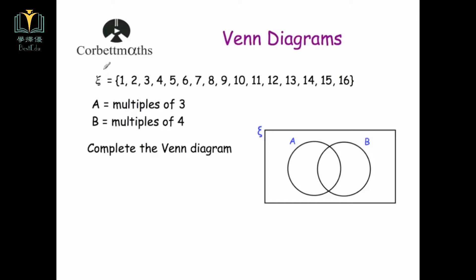So we've got the symbol Xi — it's a letter in the Greek alphabet — and it represents a universal set. It means all the data that you're interested in in the question. These curly brackets are sets. So here Xi says the set of information we're interested in is the numbers 1 to 16. A is defined as the multiples of 3, B is defined as the multiples of 4, and we've been asked to complete the Venn diagram.